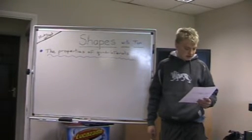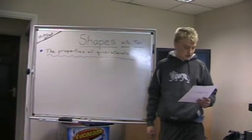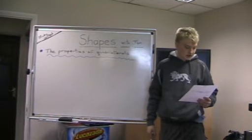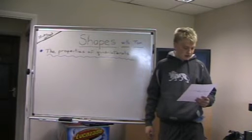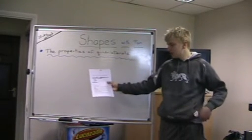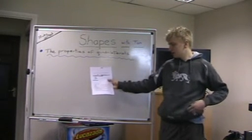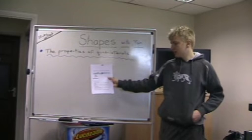A rectangle, or oblong, contains four right angles and has got two pairs of equal length sides. A parallelogram is a rectangle that has been pushed over — opposite sides are the same length and they are parallel.